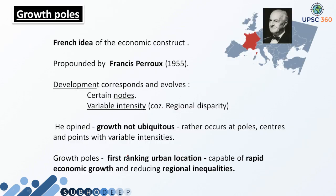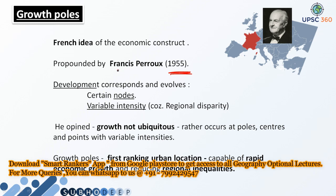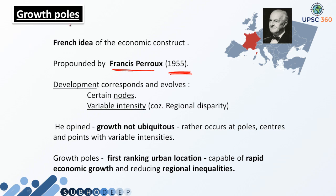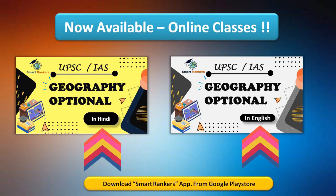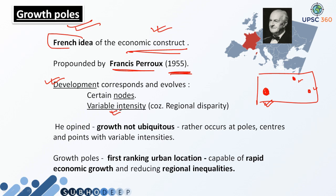The first part is growth pole. Growth pole theory was given in 1955 by a regional economist in France — his name was Francis Perroux. This growth pole theory was absolutely a French idea of economic construct. It was observed how the economy and industries of those regions evolved. On the basis of those observations, his theory was put forth, in which he said that development corresponds and evolves in certain nodes only. It is not mandatory that in all nodes growth happens at the same rate — it might be that in one region the growth rate is quite more compared to others.